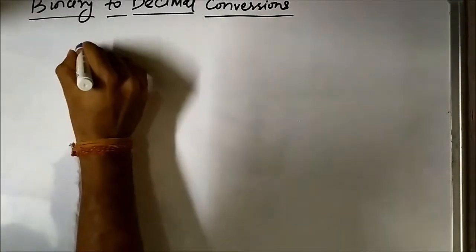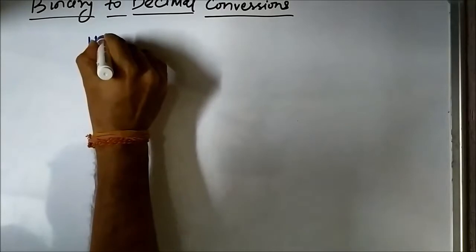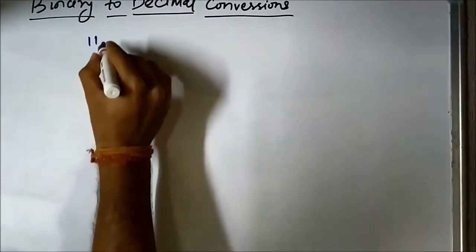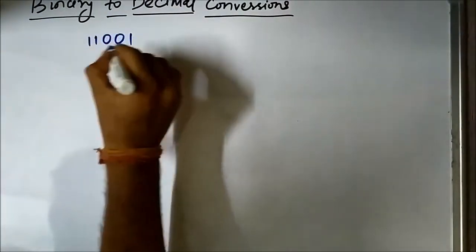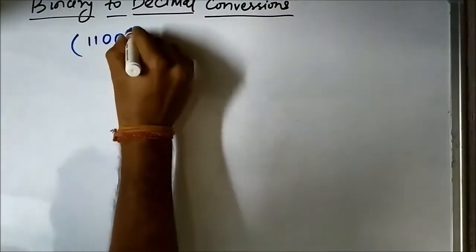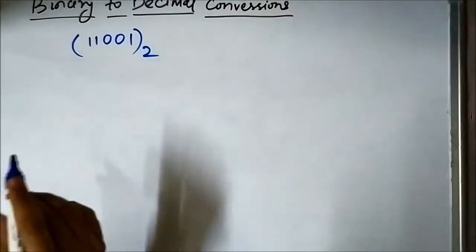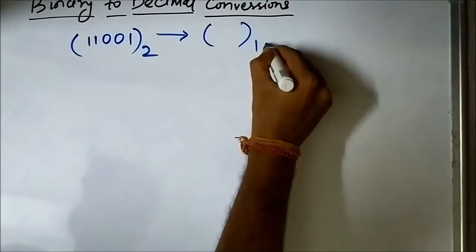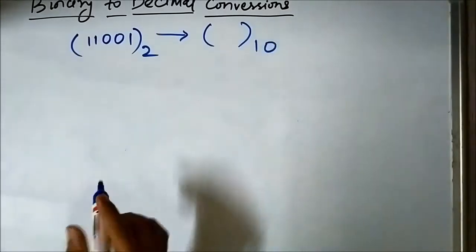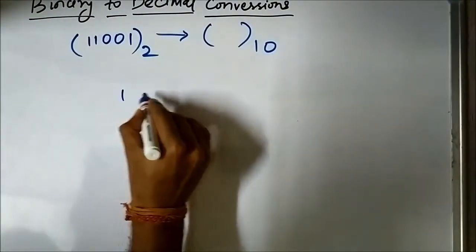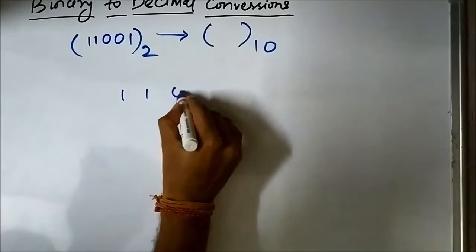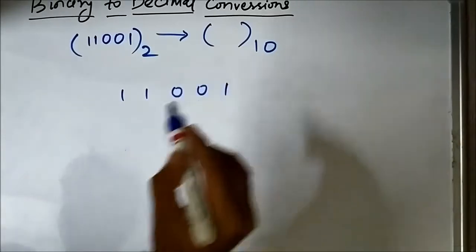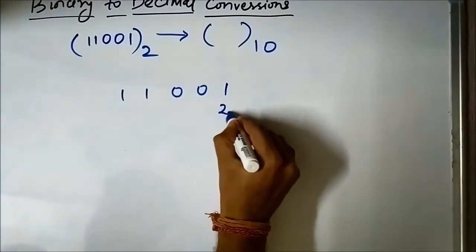Let us take another number — 11001. We have to convert it into its equivalent decimal form. This is 2 to the power 0 for the rightmost bit, and we assign weight values going left.